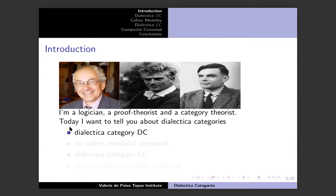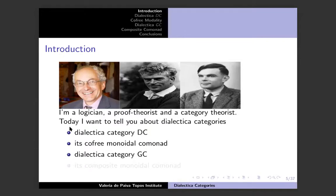Let's try to get the mathematics done. The second bit I want to talk about is the cofree monoidal comonad that makes DC an interesting model of linear logic. Then I want to talk about the dialectical category GC — suggested to me by Jean-Yves Girard, hence the G. And then I want to finish talking about the composite monoidal comonad that makes GC an interesting model as well.